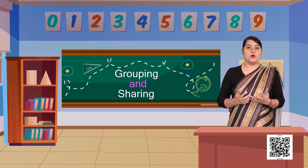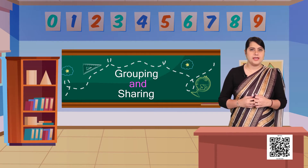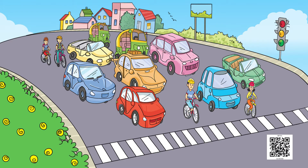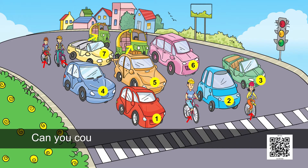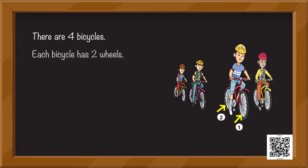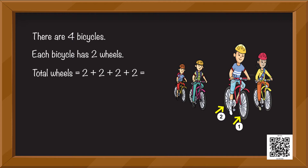Now let us see what my two friends are discussing. They seem to have a very interesting discussion going on. Let's find out. So they are observing the traffic outside. They are counting the wheels and they can see there are seven cars. There are bicycles also and there are rickshaws also. Can you count for me how many bicycles are there? That is right. There are four bicycles. Each bicycle has two wheels.